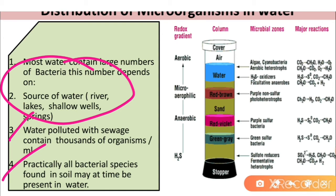Water is the most important medium for the growth of microorganisms because the most important factor required for microbial growth is moisture, and in water they can easily obtain as much moisture as they need. That is why the largest number of microorganisms can be isolated from water.